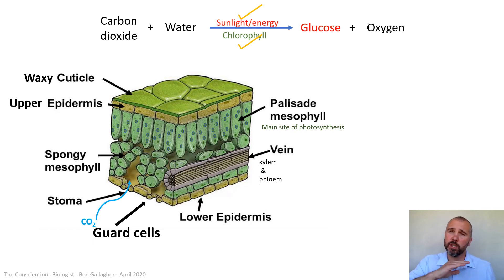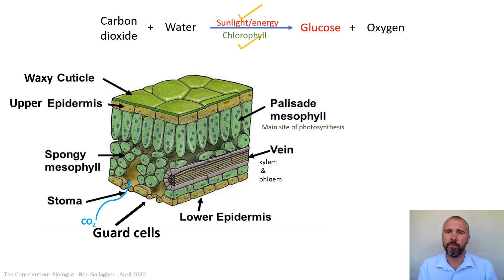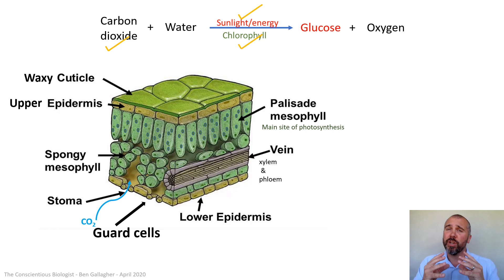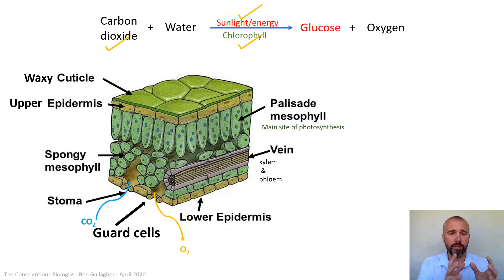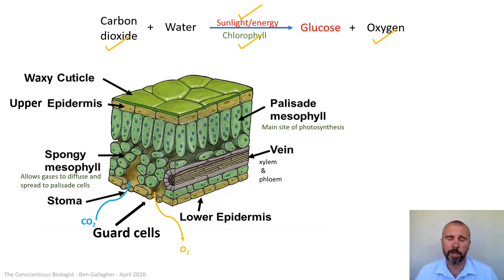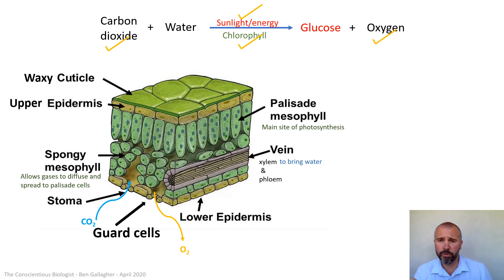Carbon dioxide diffuses into the spongy mesophyll, which allows it to spread through the leaf and reach all of the palisade cells above, so every palisade cell has carbon dioxide for photosynthesis. We can now tick carbon dioxide on our equation. Oxygen produced by the palisade cells leaves by the same route in reverse — down through the spongy mesophyll and out through the stomata. The spongy mesophyll therefore allows gases to diffuse and spread to the palisade cells.